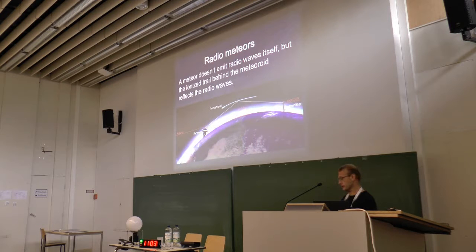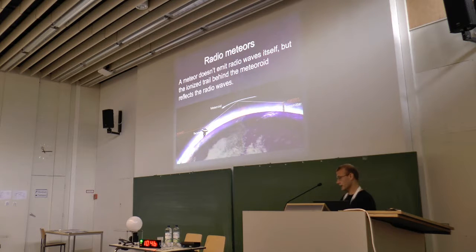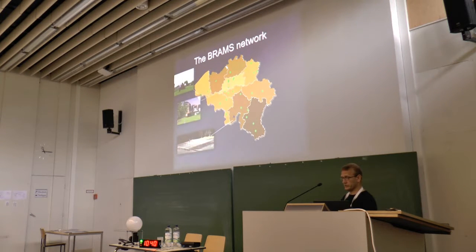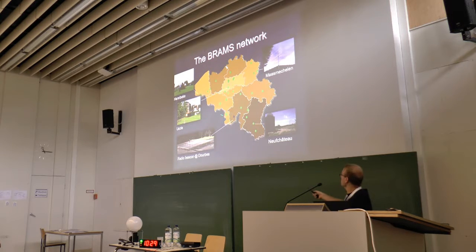We have placed a transmitter — a radio beacon — and the radio waves from this beacon bounce off the meteoroid, or the trail left behind the meteoroid after it went through the atmosphere, and can be received somewhere else. Like this, we have built a whole network in Belgium. Belgium is a small country west of Germany, and we have one radio beacon in the south of Belgium and 25 receiving stations all over the country.